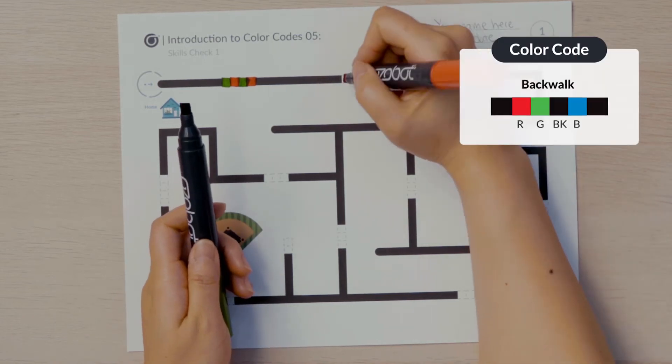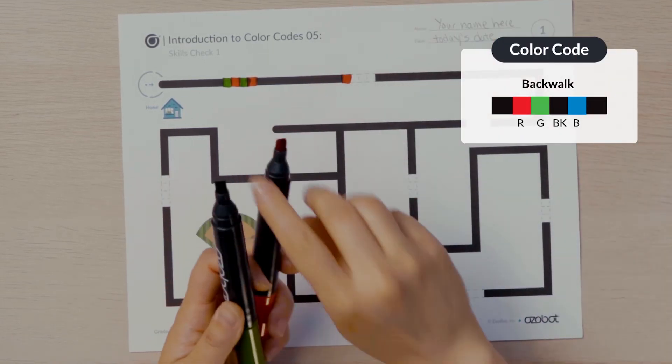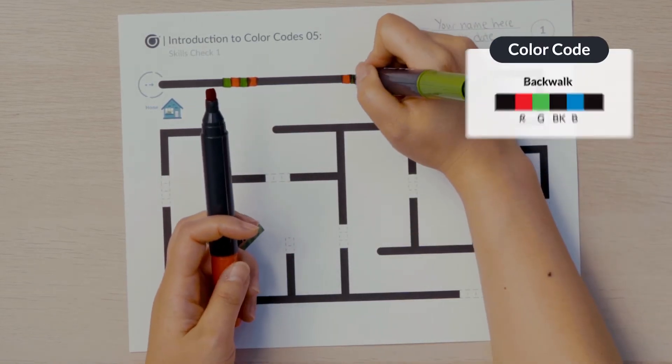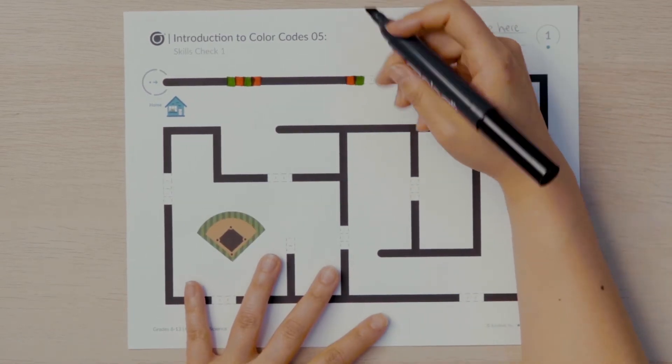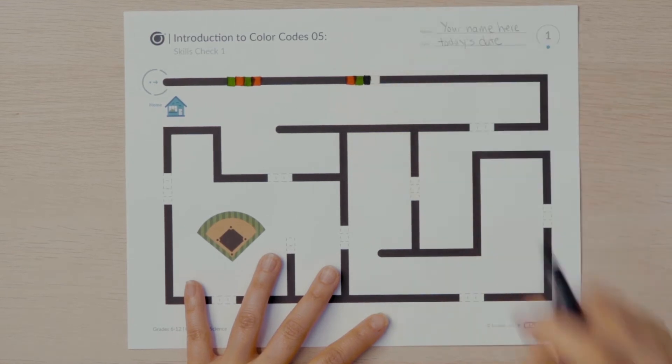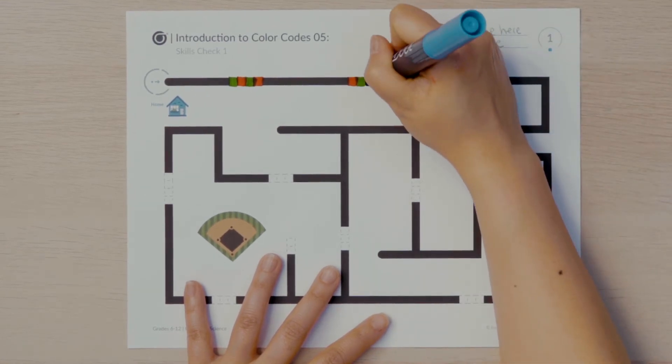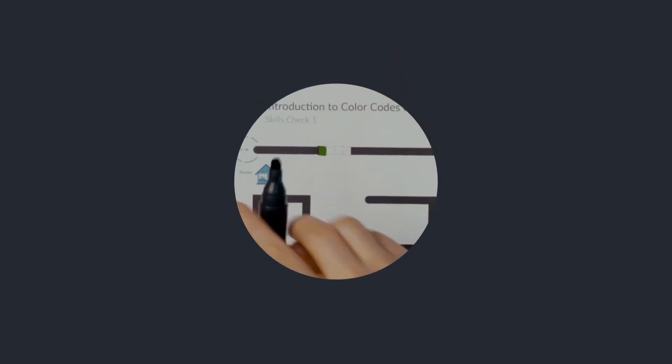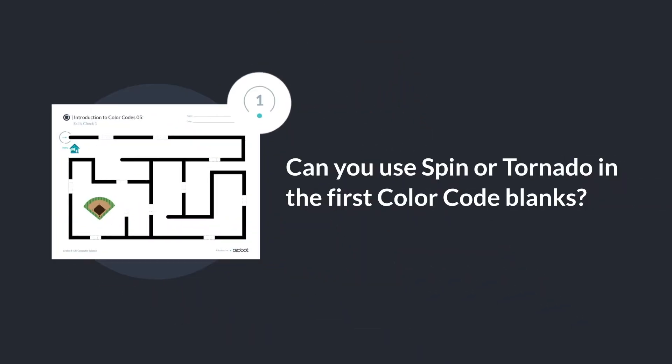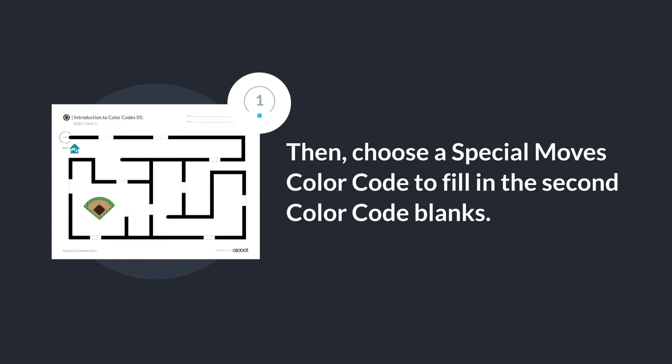I'll use back block in the second space because it needs more room to perform the action. I'll fill in red, green, black, blue. You can use any of the special moves codes in the second space. Can you use spin or tornado in the first color code blanks? Then choose a special moves color code to fill in the second color code blank.